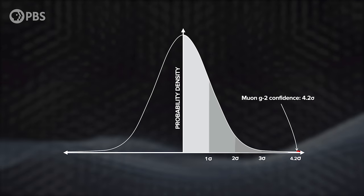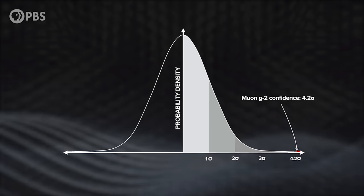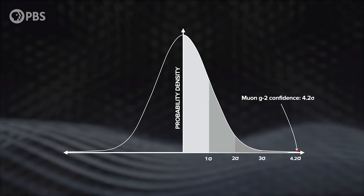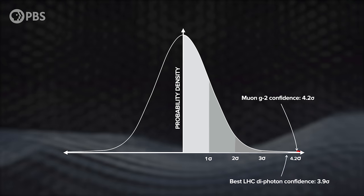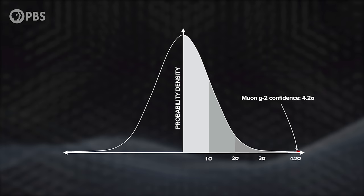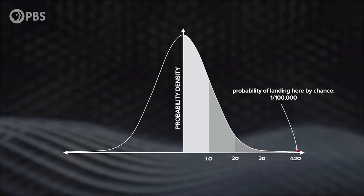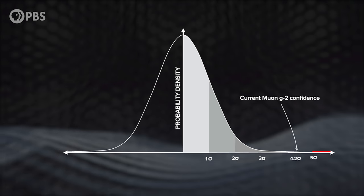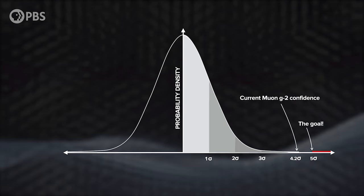So not yet a slam dunk detection, but definitely moving in the right direction and with more confidence than the LHC bump ever achieved. The chance of randomly getting a 4.2 fluctuation is just a little over 1 in 100,000. The hallowed 5 sigma confidence will take time and many more muons.